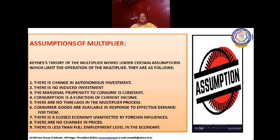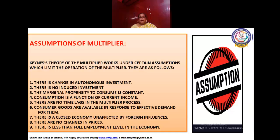Assumptions of Multiplier. The theory of the Multiplier operates under certain assumptions which limit its operation. They are as follows: Number 1 — there is a change in autonomous investment. Number 2 — there is no induced investment. Number 3 — the marginal propensity to consume is constant.